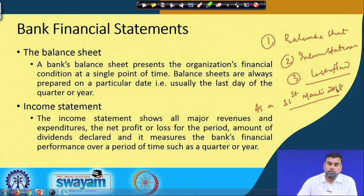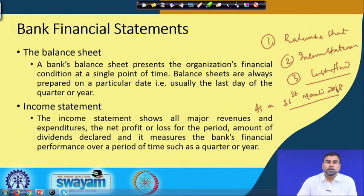Whenever you talk about the income statement, the income statement basically shows all major revenues and expenditures, net profit, loss, and dividends if the company paid any. It also measures the bank's financial performance over a period — it does not show performance at a particular point of time or date, but it shows performance over a period of time.